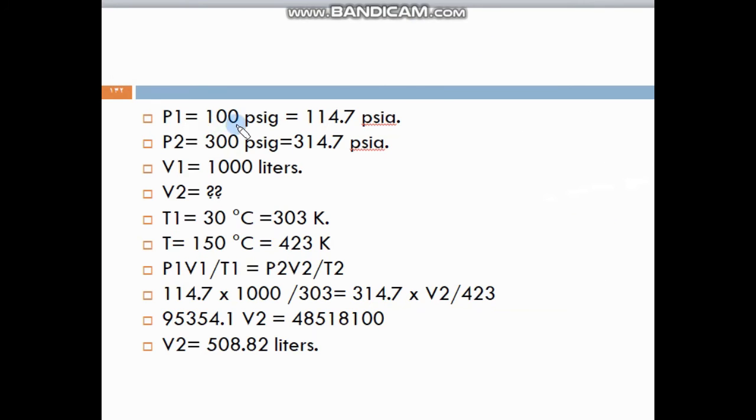The P1 is equal to 100 PSI gauge, we will change it to absolute pressure. And the P2 equals 300 gauge pressure, we will change it to absolute pressure. Here, the T1 is equal to 30 Celsius, we change it to Kelvin, and the T2 we change it to Kelvin also.